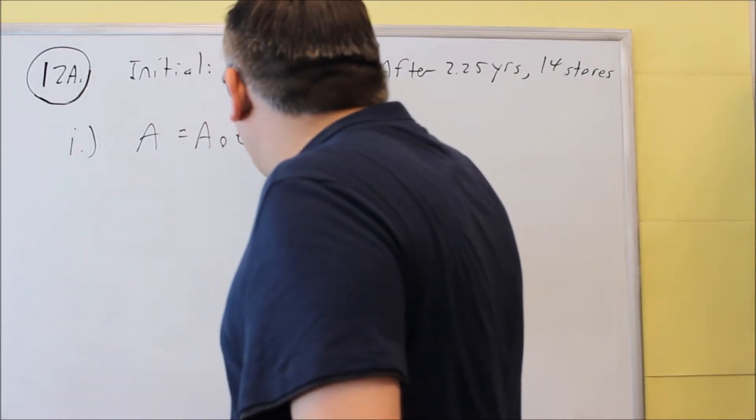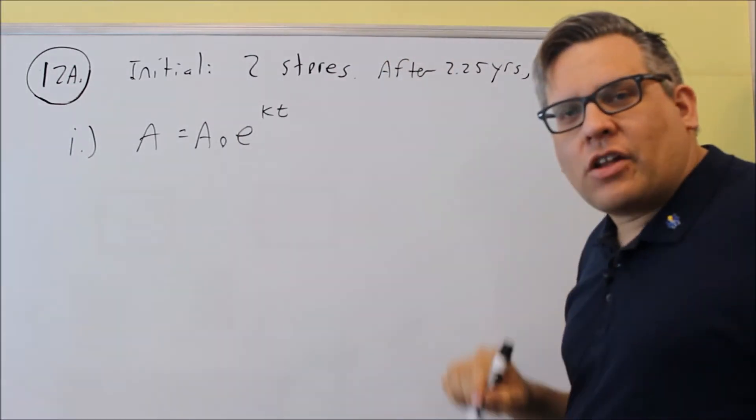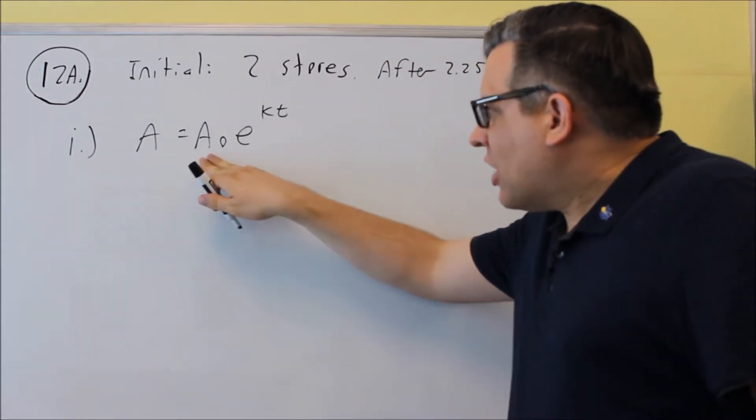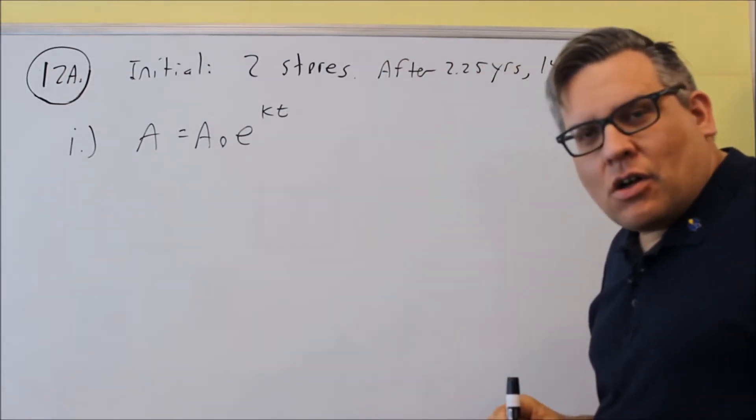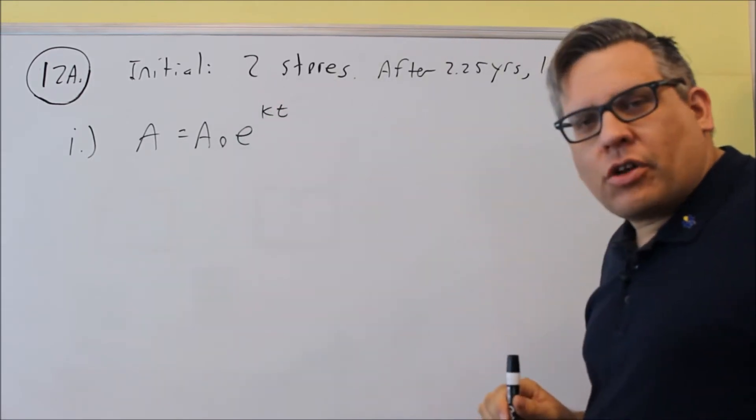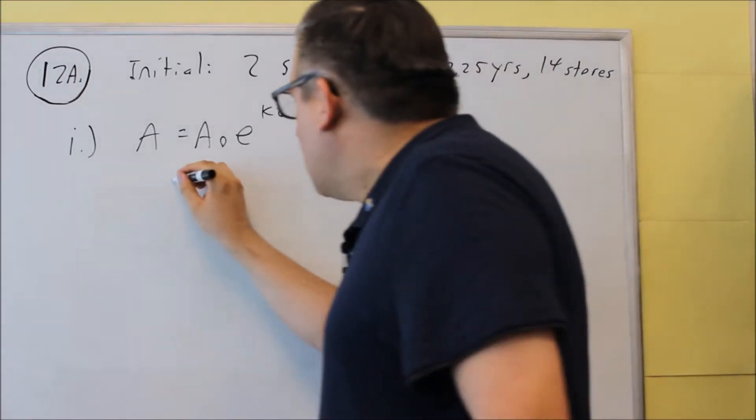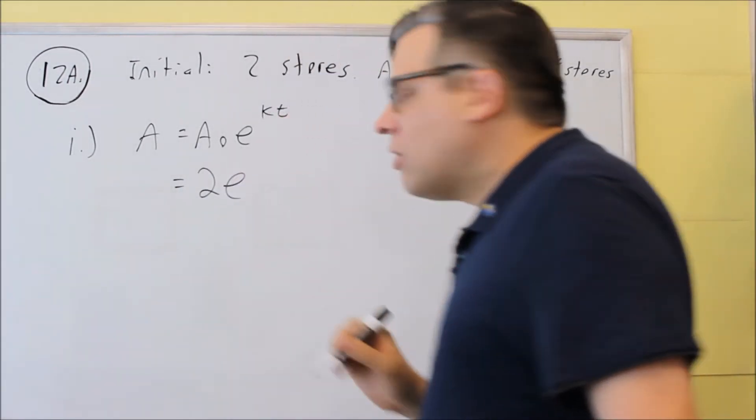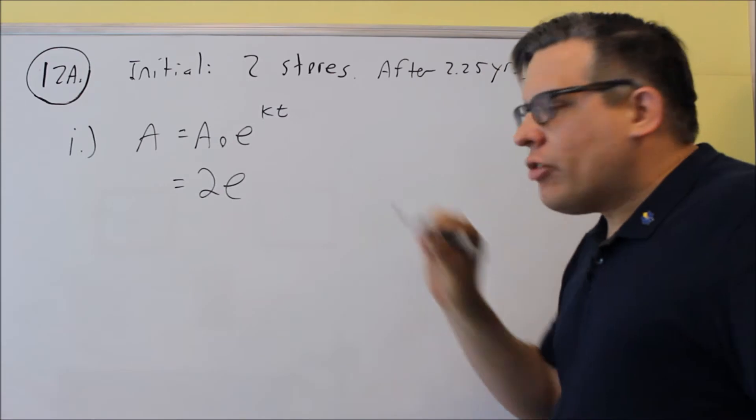And this is the exponential growth and decay formula, A equals A₀e^(kt). So let's fill in the information based on what they give us. It says initially there are two stores, which means we're going to put a 2 in right there, and then you have kt.